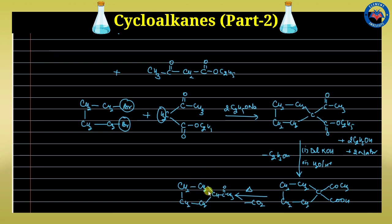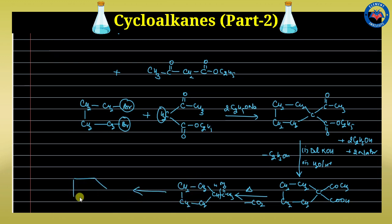In the second step, decarboxylation is performed by heating, giving the ketone of cyclopentane. This ketone obtained can then be easily converted into the corresponding hydrocarbon using suitable reagents. For example, using a reagent where H and OH are added followed by further hydrolysis in acid or basic conditions to break the C=O bond and obtain the cycloalkane.